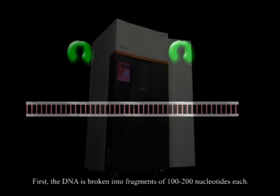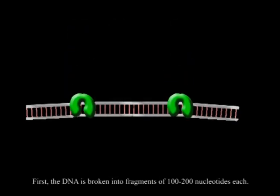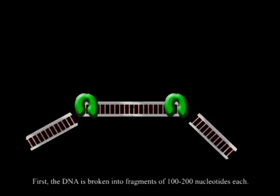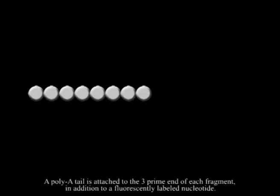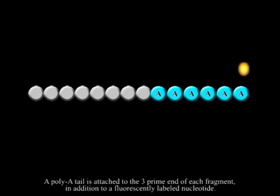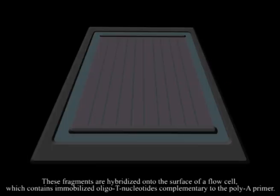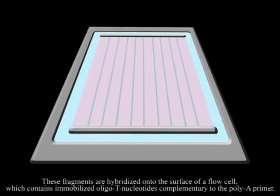First, the DNA is broken into fragments of 100 to 200 nucleotides each. A poly A tail is attached to the three prime end of each fragment, in addition to a fluorescently labeled nucleotide. These fragments are hybridized onto the surface of a flow cell which contains immobilized oligo T nucleotides complementary to the poly A primer.